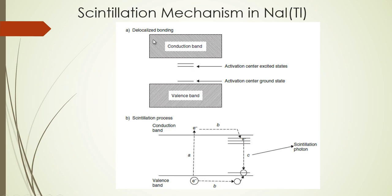When an electron jumps from the valence band to the conduction band, it leaves a hole in the valence band. One of the electrons from the activation center ground states can fill that hole, since they have almost similar energies. Meanwhile, the excited electron in the conduction band can drop to the activation center excited states, as this transition is quantum mechanically allowed and the activation center excited state is lower in energy than the conduction band.